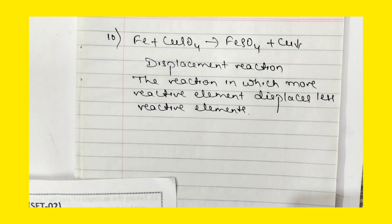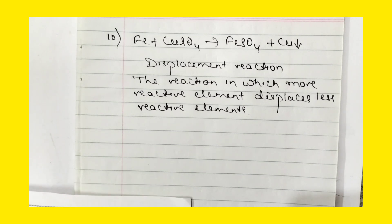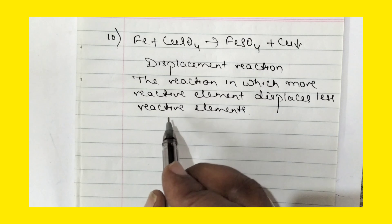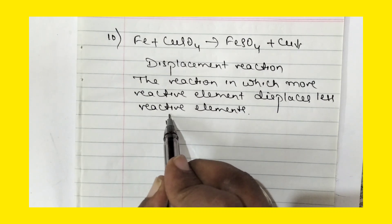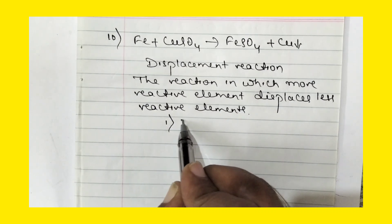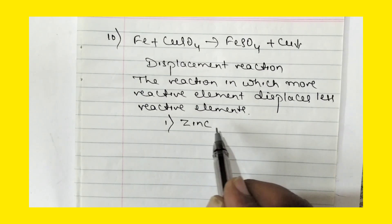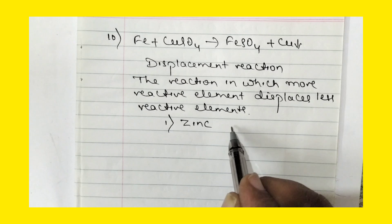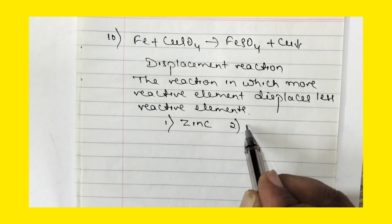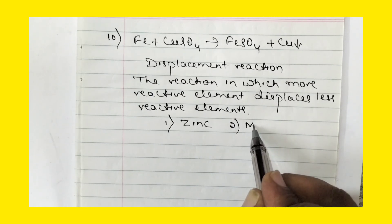List two other metals which can be used in place of iron to show the same type of reaction with copper sulfate solution. We can take zinc, and we can take magnesium.